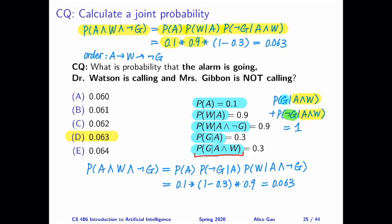Okay? So given this, we can derive probability of not G given A and W as 1 minus probability of G given A and W. So this gives us, multiply the numbers, this gives us the final result.